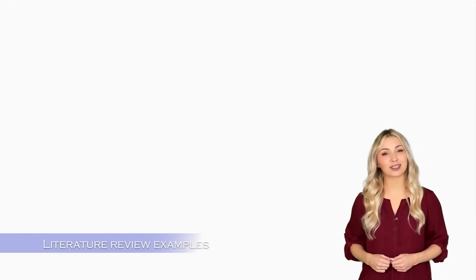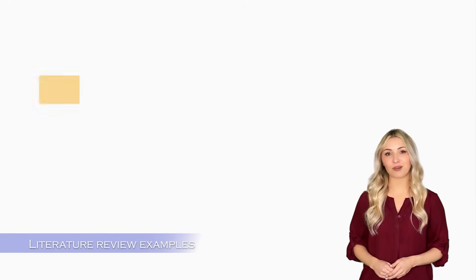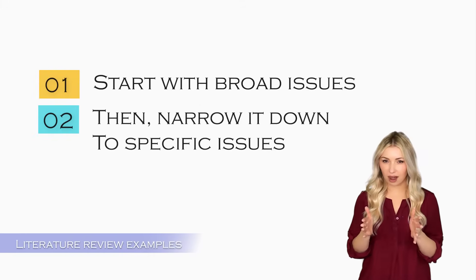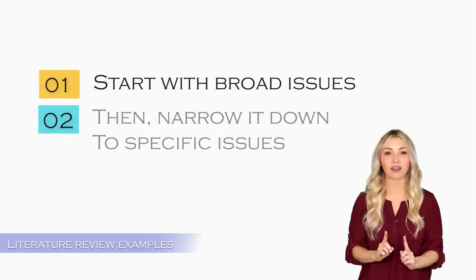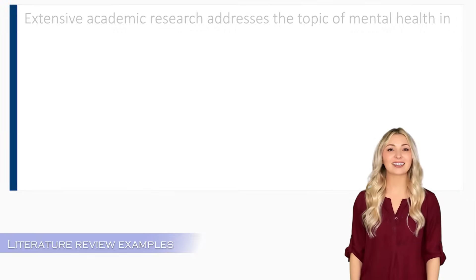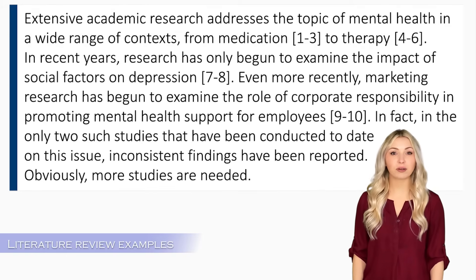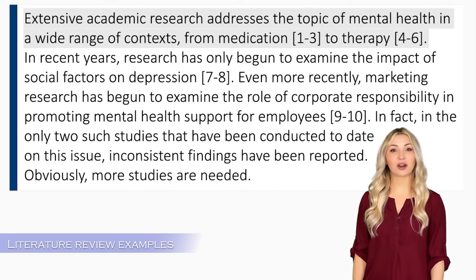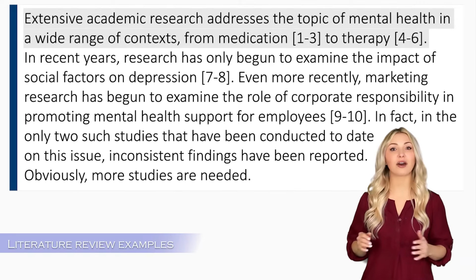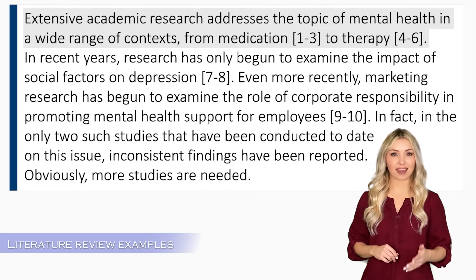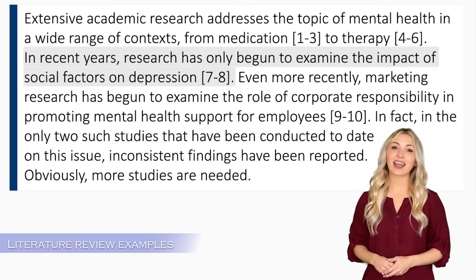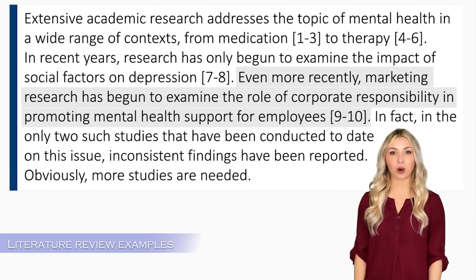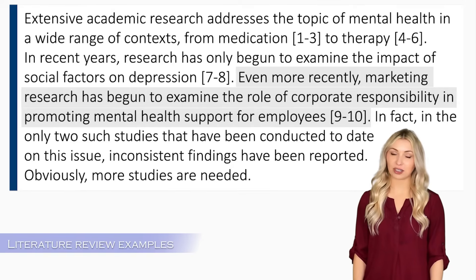Let's look at some examples of literature reviews. Typically in a literature review, you start with broad issues and then narrow it down to specific issues, continuing to narrow it down until you reach the articles most relevant to your research question. Here is an example of a standard literature review from a social sciences research paper. The authors have started broadly by saying that research on mental health is quite varied, ranging from medication to therapy. Then they narrow down the topic to the impact of social factors on depression, citing a few papers. Then they further narrow it down to the role of corporates in providing mental health support for their employees, which directly relates to their research problem.